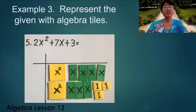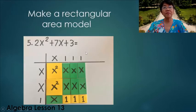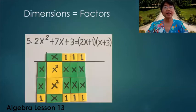Example 5: 2x² + 7x + 3. We represent this with algebra tiles. We have 2 x² tiles, 7 x tiles, and 3 unit tiles. Then we form a rectangular area model, and the dimensions are (2x + 1) and (x + 3).